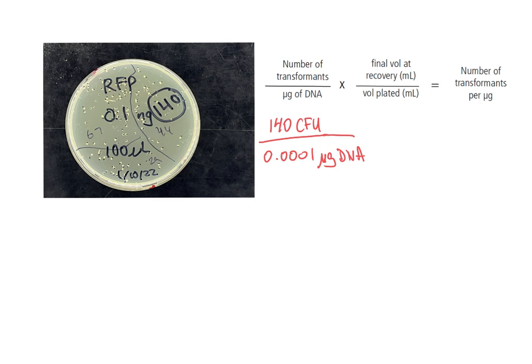If you did the math, the conversion is 0.0000001 micrograms of DNA. Then you can do the math for that - it'll be a big number. I believe that should be 1.4 times 10 to the 6 CFU per microgram of DNA.